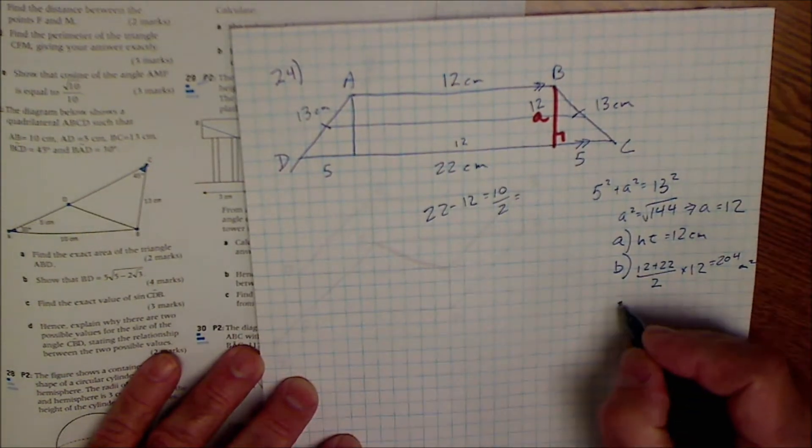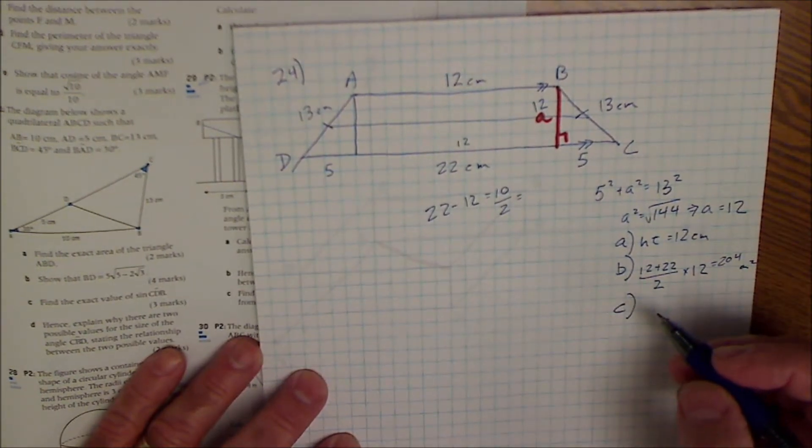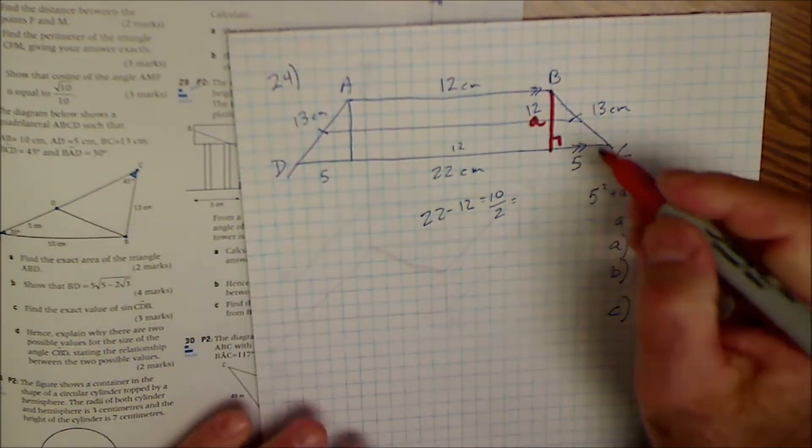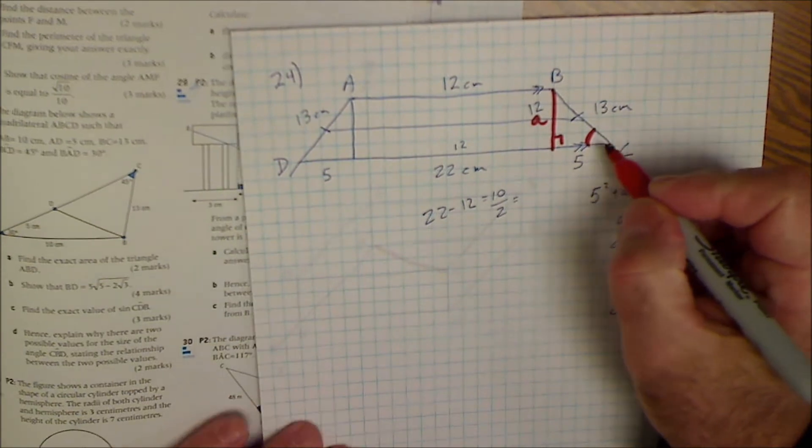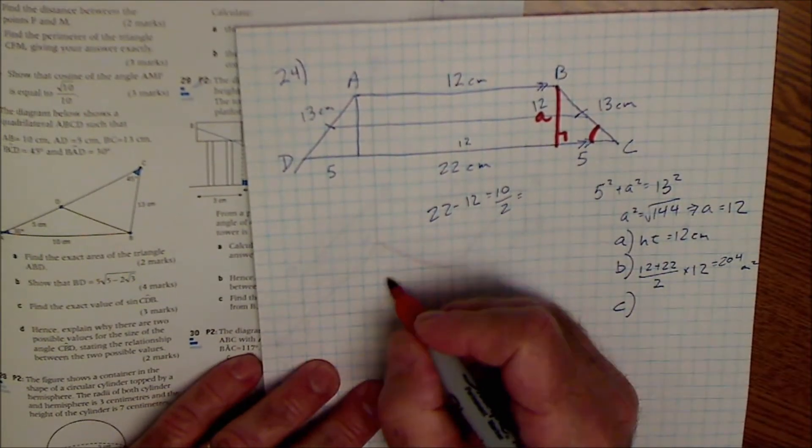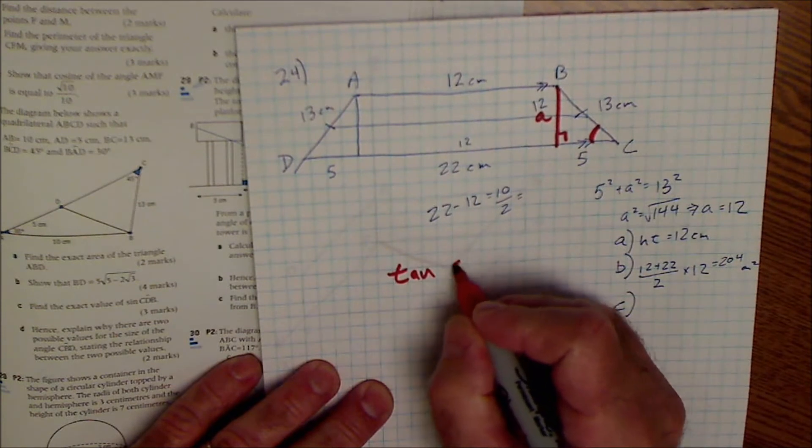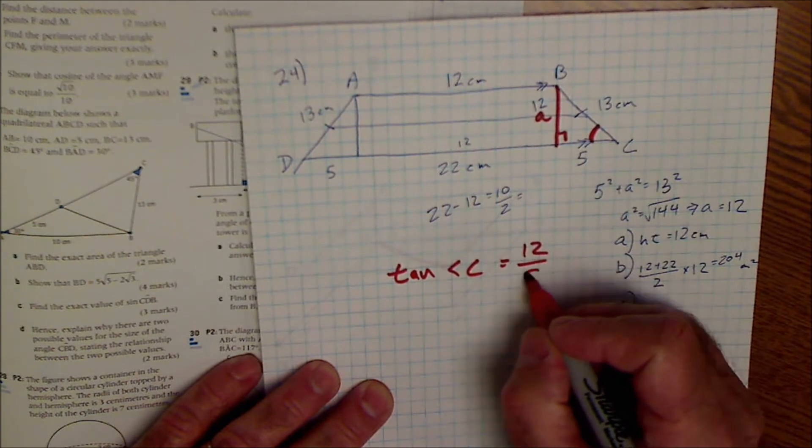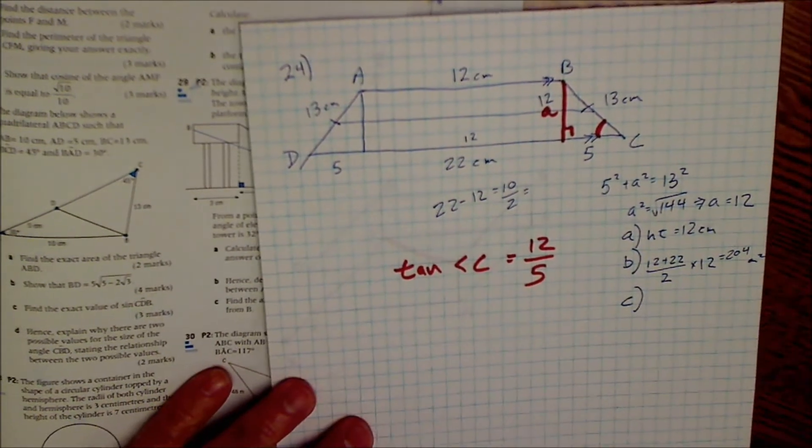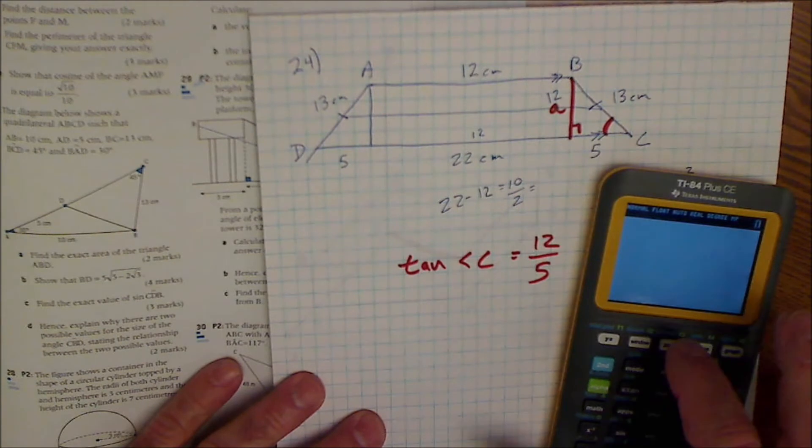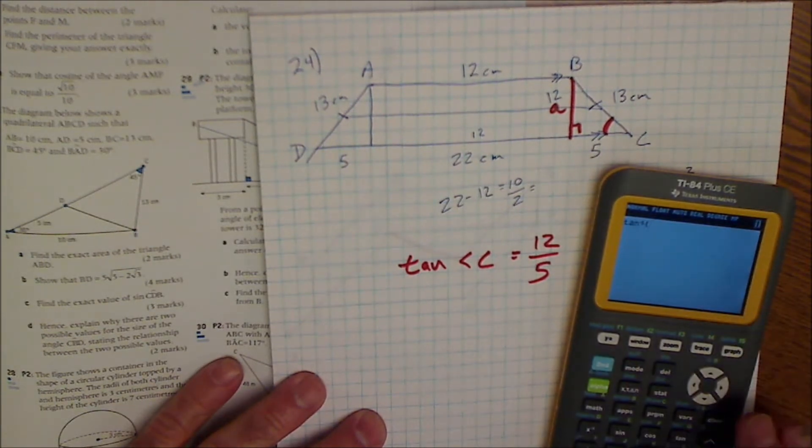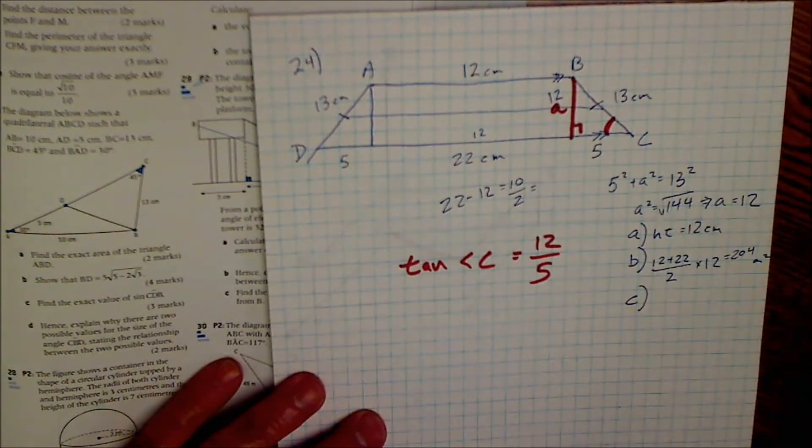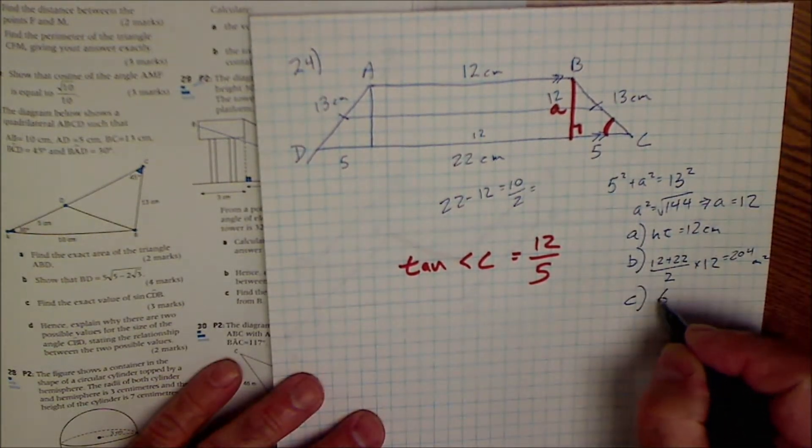Part C is find the size of angle C. So find the measure of this angle here, that red angle there, angle C. So I have tangent of angle C equals opposite over adjacent, 12 over 5. And then I take the arc tan in degree mode, second tangent of 12 divided by 5, and I get 67 degrees. So angle C is 67 degrees.